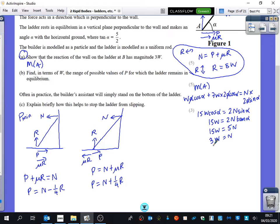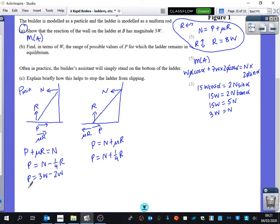R is 8W. Yeah, R is 8W, which we worked out earlier on. And N is 3W. So here we get 3W minus a quarter of 8W, which is 2W. So we get that P is equal to W.